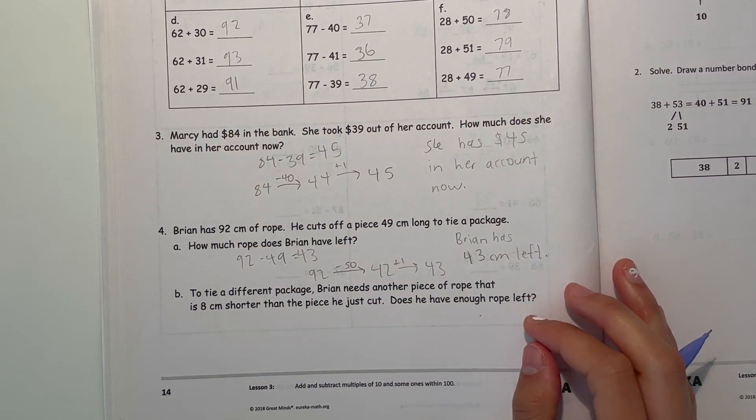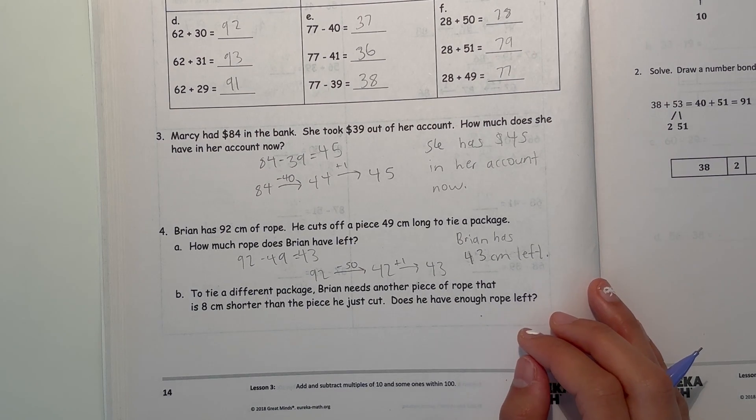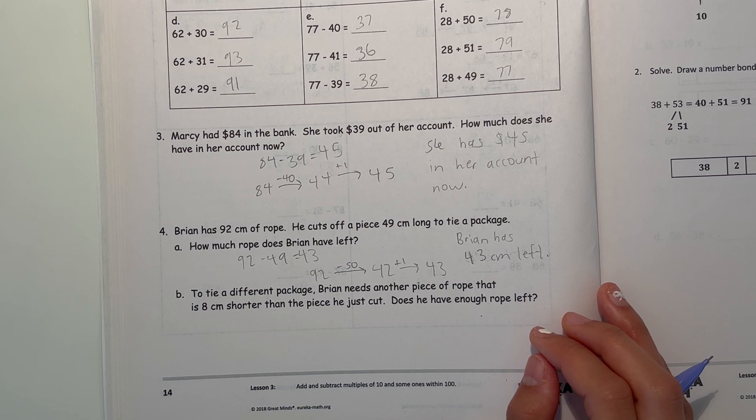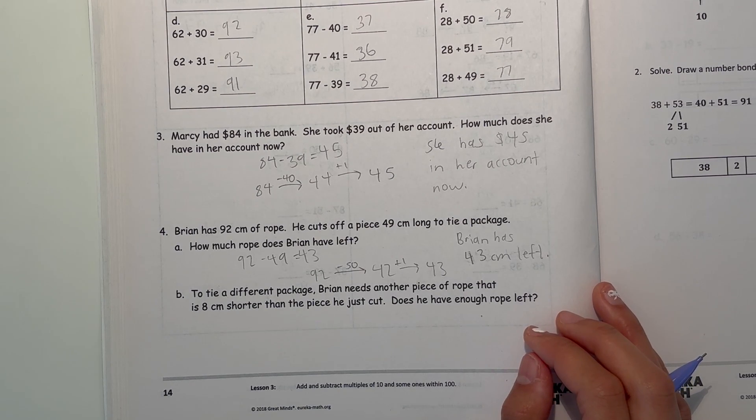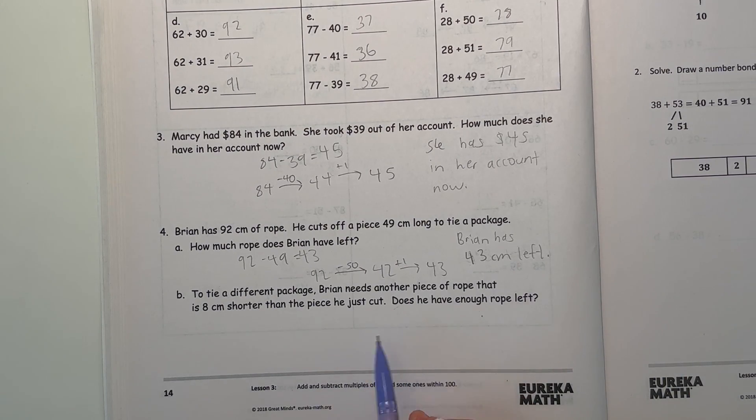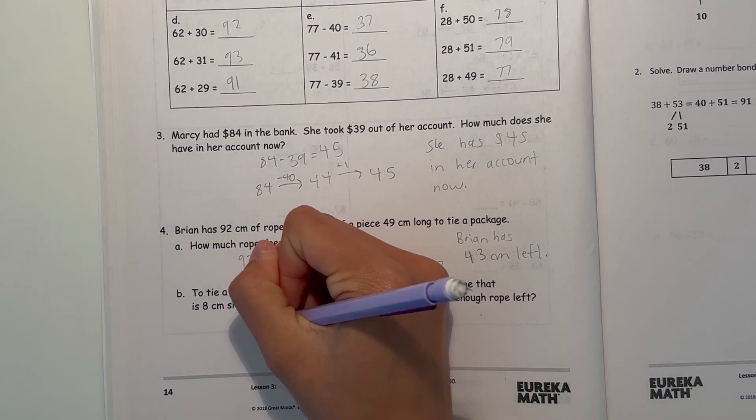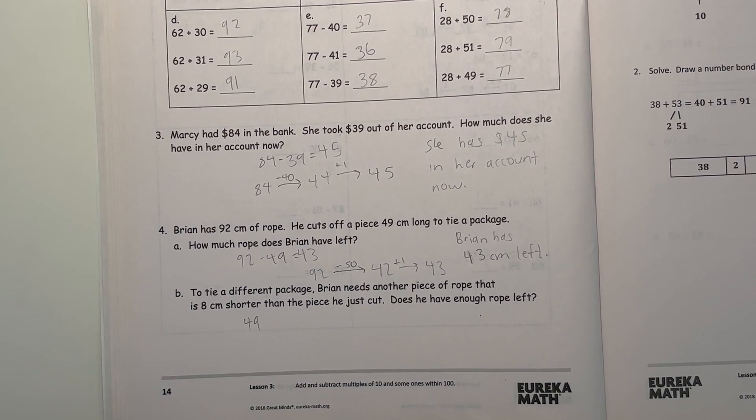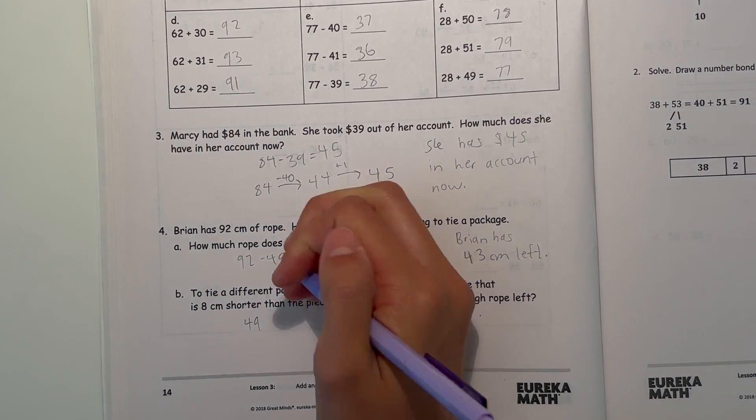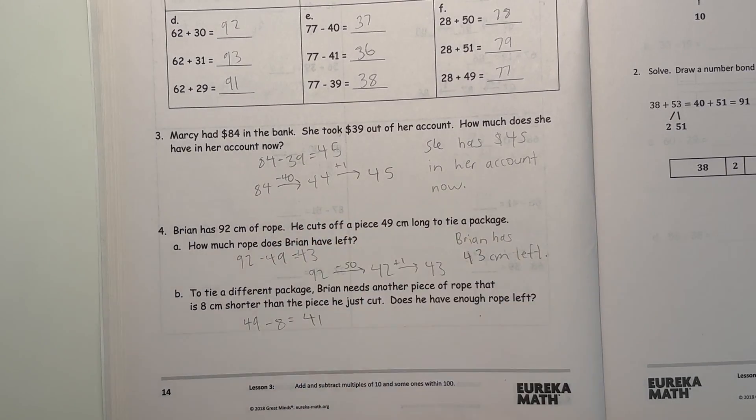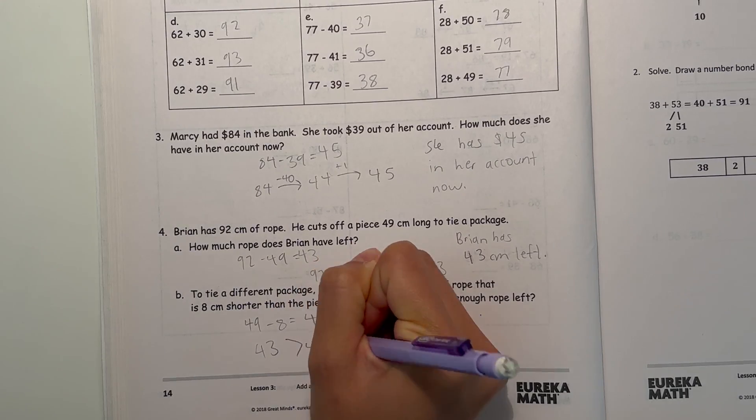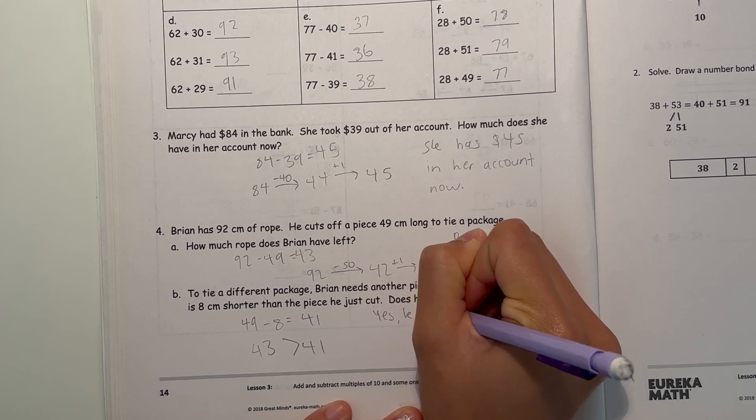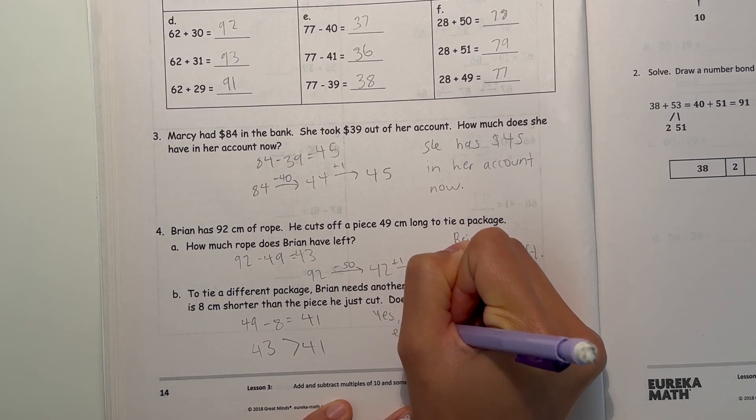Now B, to tie a different package, Brian needs another piece of rope that is 8 centimeters shorter than the piece he just cut. So he just cut 49 centimeters, and he needs a piece that's 8 centimeters shorter, that's 41. So he has 43 left and 43 is greater than 41, so that means yes, he has enough left.